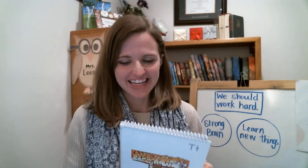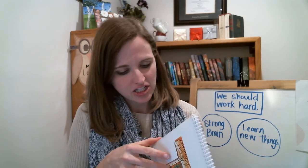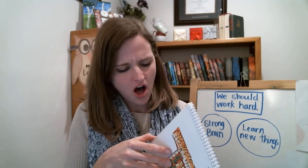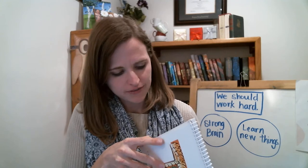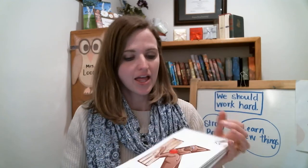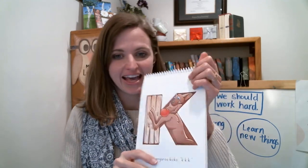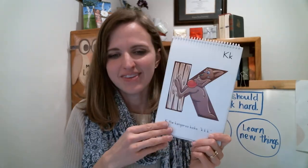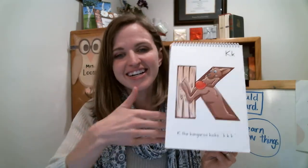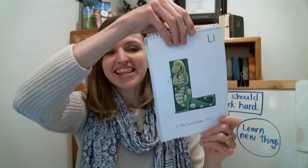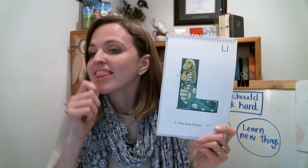Very good. You've learned so many letters. Let's not do all of them right now but we're going to review, starting with K. K the kangaroo kicks — K k k k. L the lizard licks — L l l l.